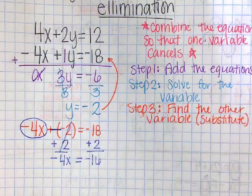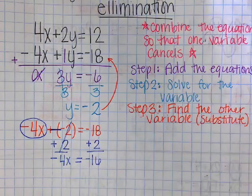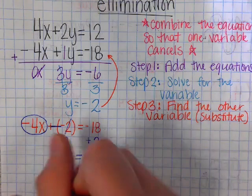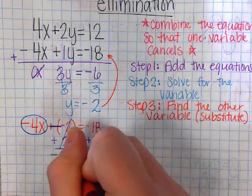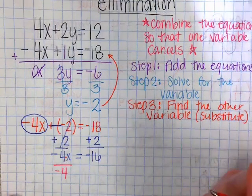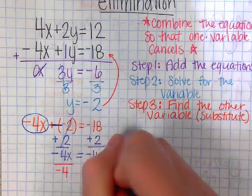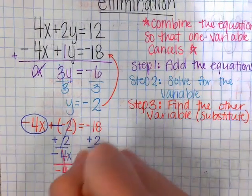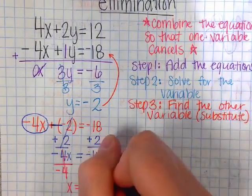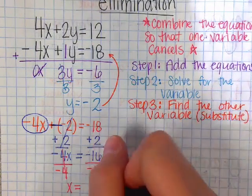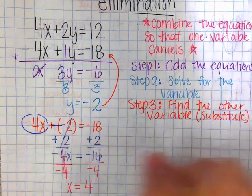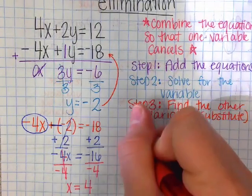Negative 4x equals negative 16. I'm going to divide by negative 4, because it's multiplying negative 4 times x. The opposite of multiply by negative 4 is divide by negative 4, and divide by negative 4. So x equals a negative divided by a negative is a positive. 16 divided by 4 is 4.